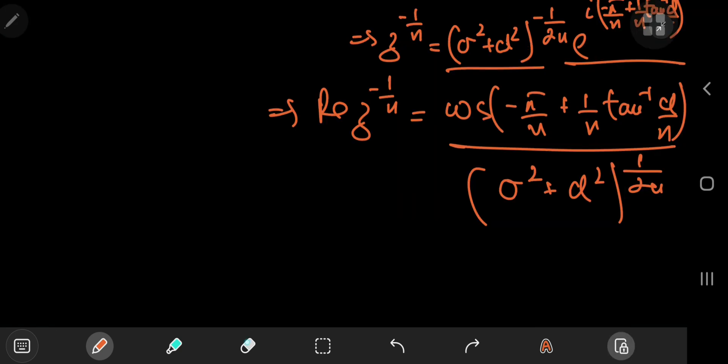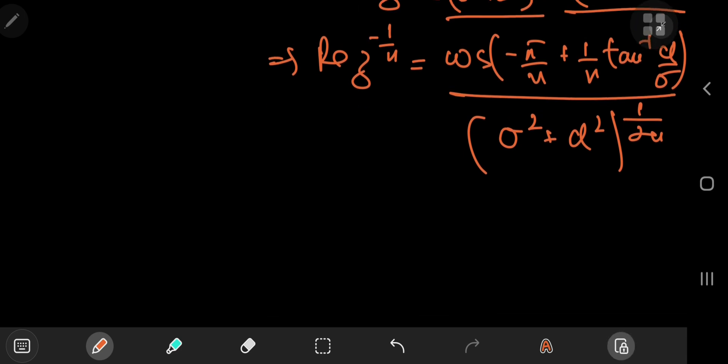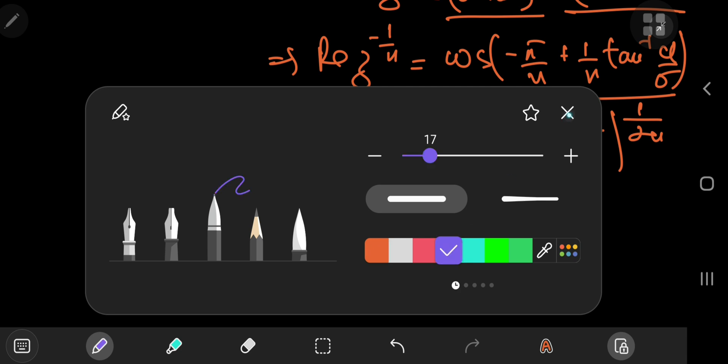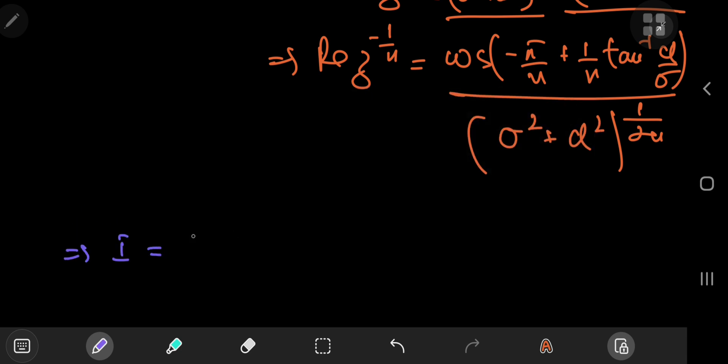Oh, there's a slight mistake here. We were supposed to divide alpha by sigma in the argument of the inverse tangent function. This looks pretty cool. And once we incorporate it into our final result, we find that i equals 1 by n times gamma 1 by n, which can be written using the recursion formula for the gamma function as gamma 1 plus 1 by n divided by this thing here, which is sigma squared plus alpha squared to the 1 by 2 n times this cosine function.